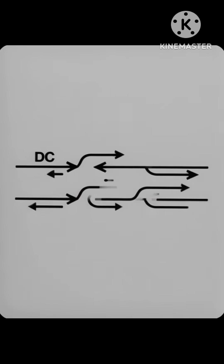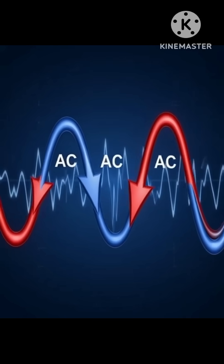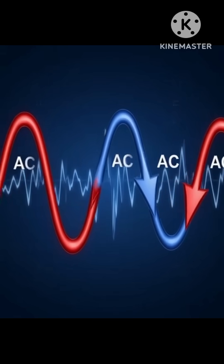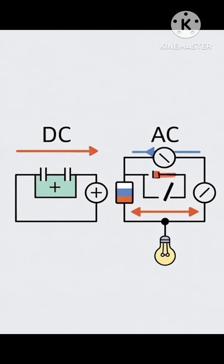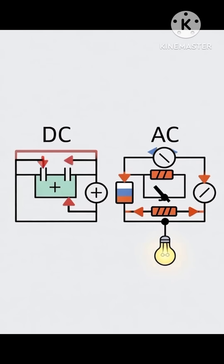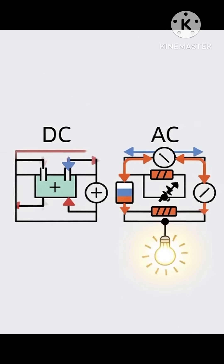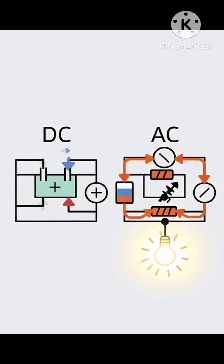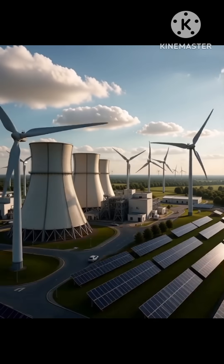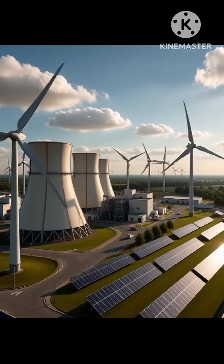In DC, electric charge flows in one constant direction. In AC, the current changes its direction many times every second — in most countries, 50 or 60 times per second.